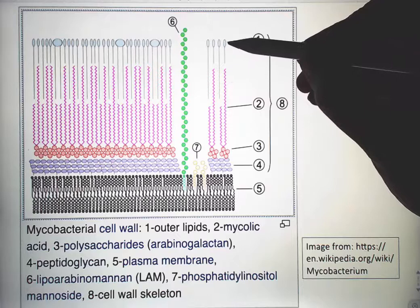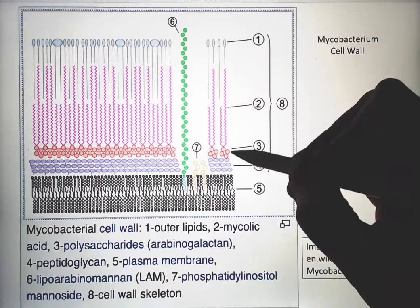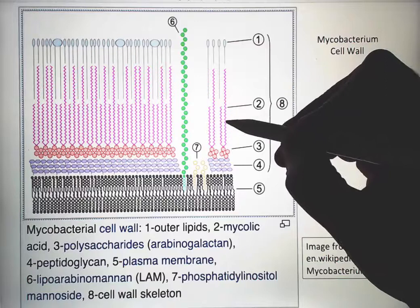And then the next layer is mycolic acid, which is very long acids. The acid is just at the tip. These long carbon chains are very hydrophobic.